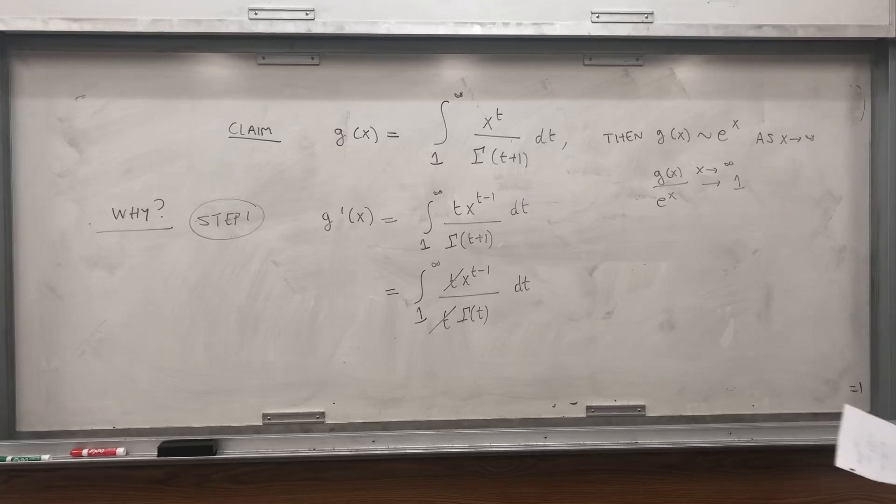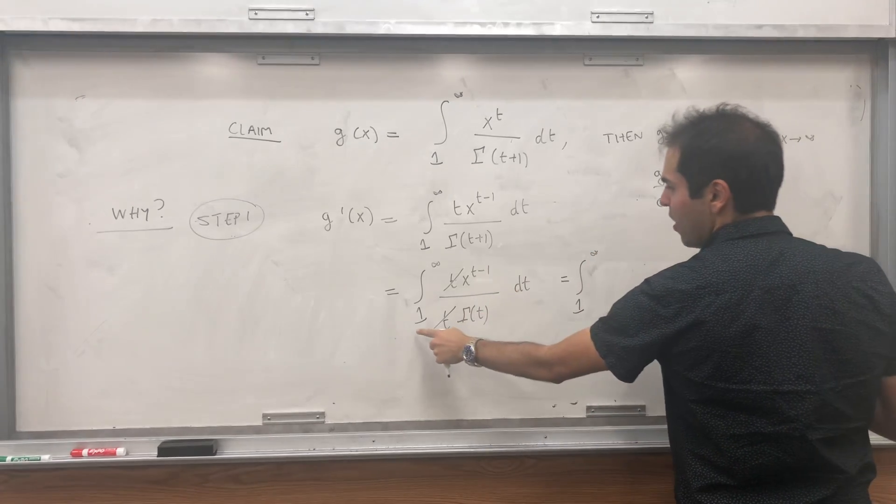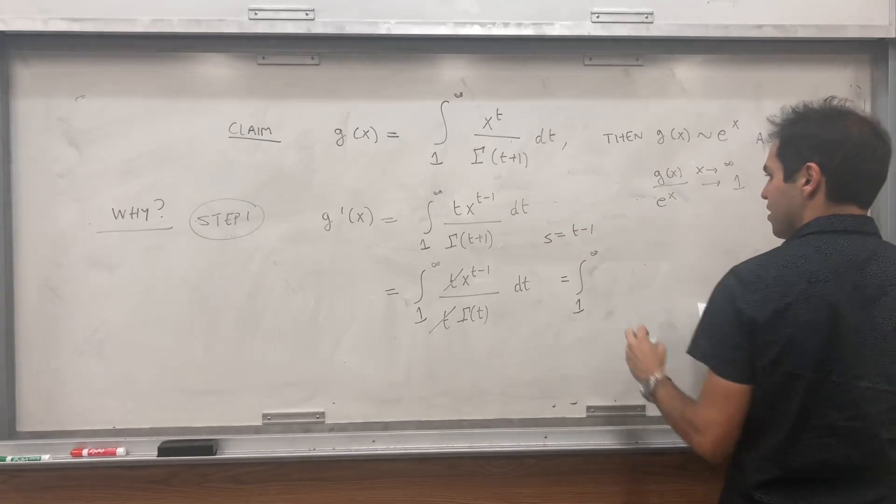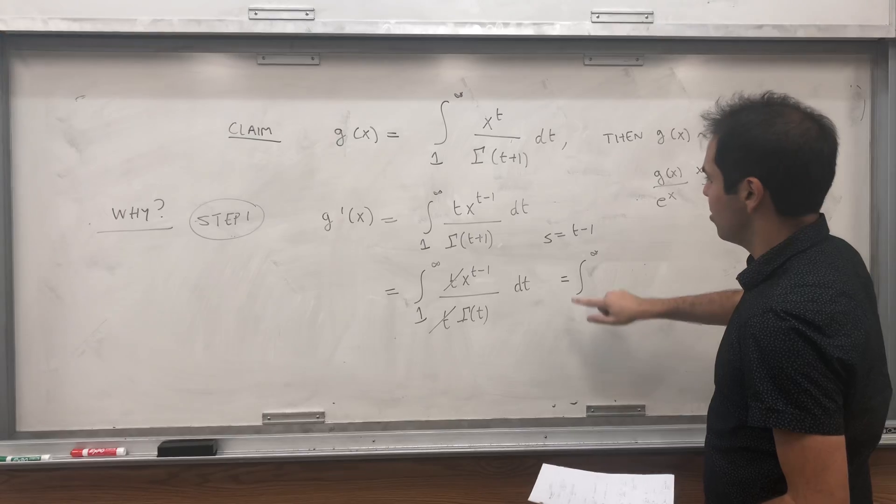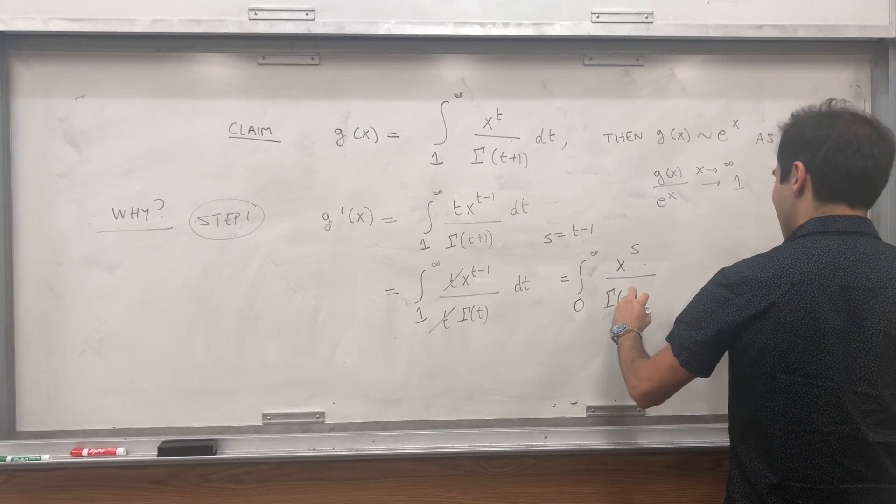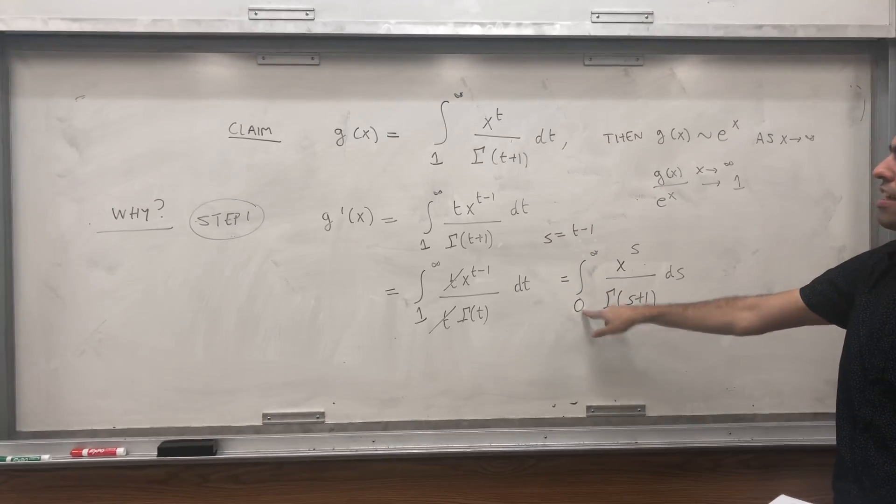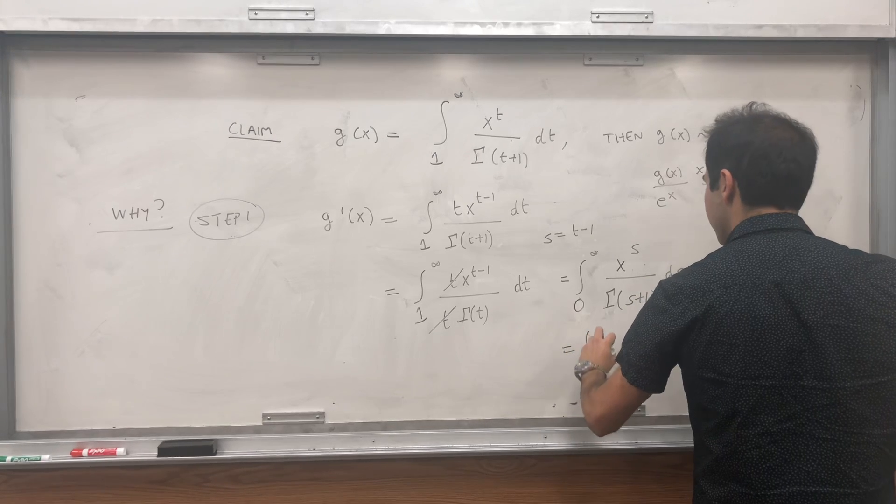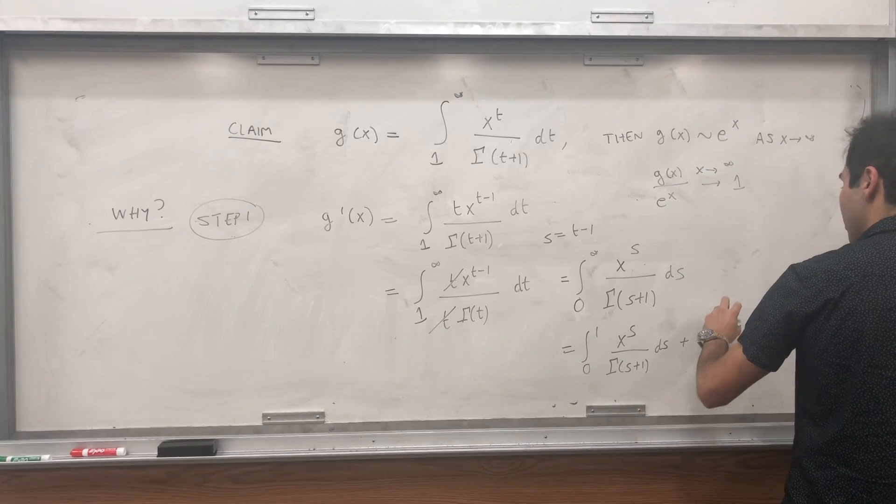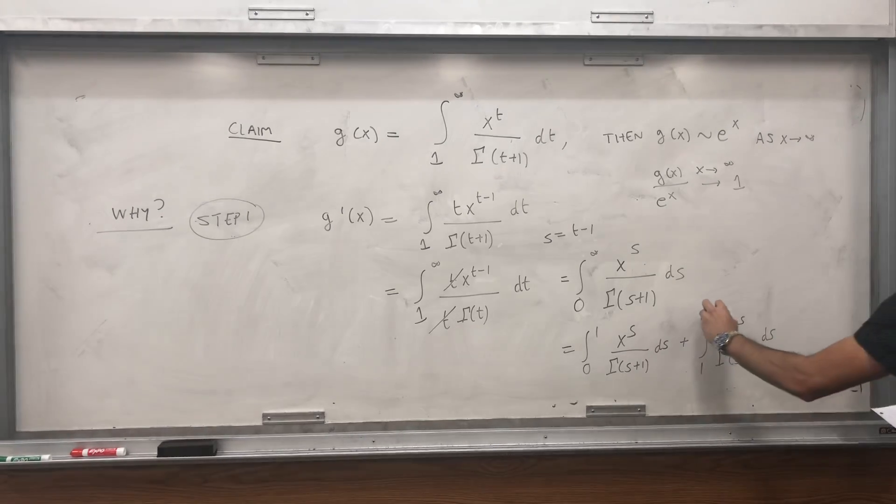And what's left then is the integral from 1 to infinity of, well, we have t minus 1 and we have this 1. So let's use a u sub, let's say s equals to t minus 1. And then if you plug this back in, so s of 1 is 0, s of infinity is infinity. So we're left with x to the s over gamma of s plus 1 ds. And that's great. It almost looks like our function g, except our function g starts at 1. So let's just separate the integrals out. So it's integral from 0 to 1 of x to the s over gamma of s plus 1 ds, plus the integral from 1 to infinity of x to the s over gamma of s plus 1 ds. Which is g. So g of x.